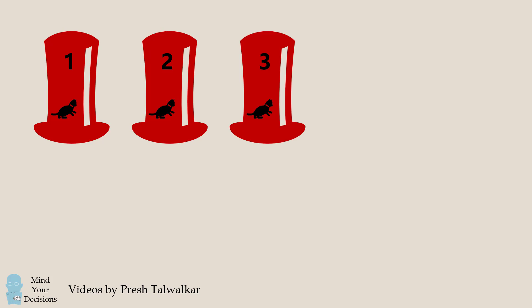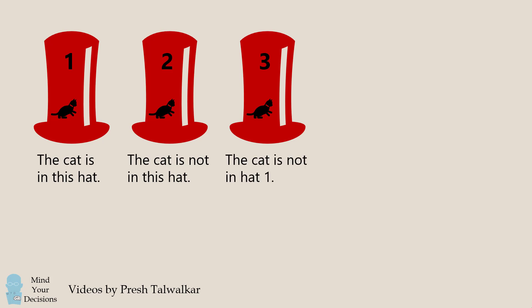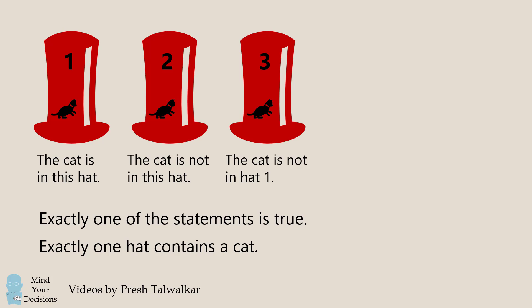There are three hats and each hat has an accompanying statement. Hat 1: The cat is in this hat. Hat 2: The cat is not in this hat. Hat 3: The cat is not in hat 1. Exactly one of the statements is true,